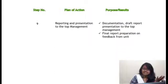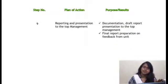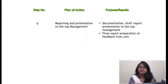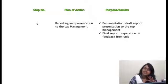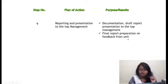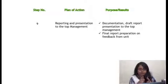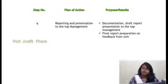Step 9 is reporting and presentation to top management. The auditor has performed all these tasks and now provides all the reports to the industry so that management can take further steps and implement policies. A final draft is prepared, documentation is done, a presentation is given to management, a final report is generated, and feedback is taken from all units. This is all merged into a compiled form so that data is available.